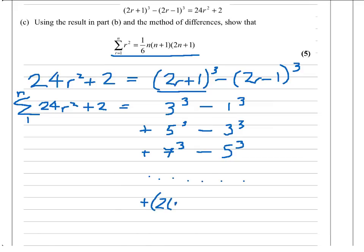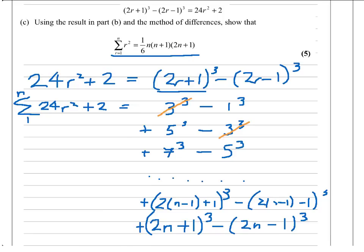I'm going to substitute n minus 1. I'd have 2(n-1)+1 cubed minus 2(n-1)... and it's so tempting just to jump a few stages. Don't rush, just show all your working. Finally, I've got (2n+1)³ minus (2n-1)³. The pattern for cancellation is, the top left is going to cancel with the next one down, 5³ cancels with 5³, and so on.